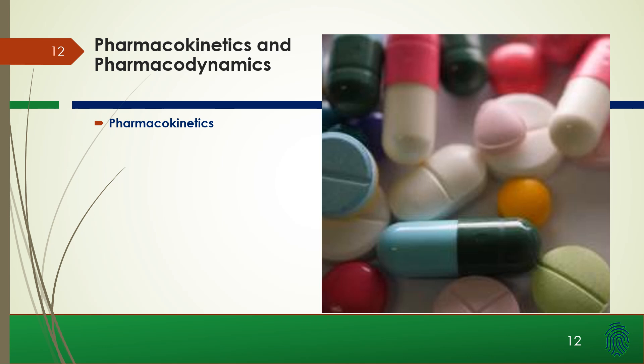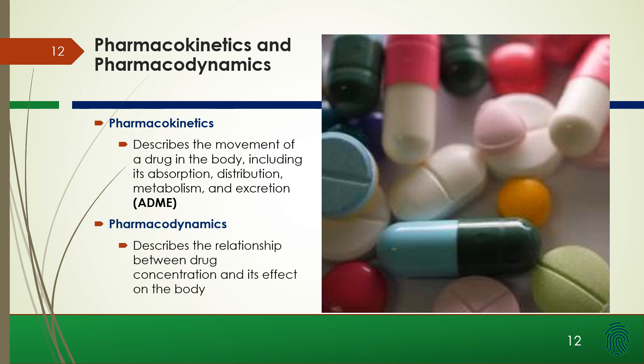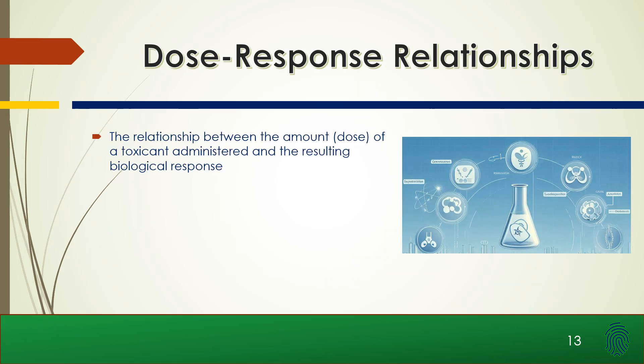Now let's touch on an important component of toxicology — pharmacokinetics and pharmacodynamics. Pharmacokinetics describes the movement of a drug in the body, including its absorption, distribution, metabolism, and excretion, or ADME. Pharmacodynamics describes the relationship between drug concentration and its effects on the body. The dose-response relationship describes the relationship between the amount or dose of a toxicant administered and the resulting biological response, and is fundamental to understanding the toxicity of a substance.